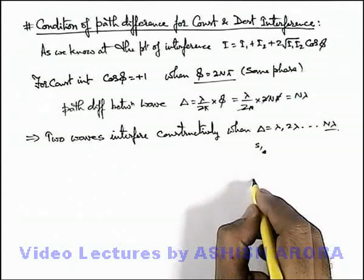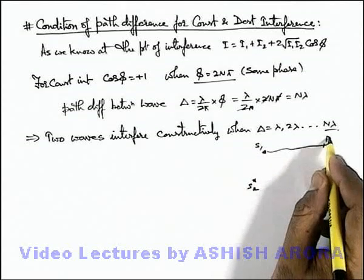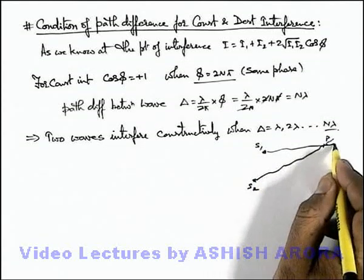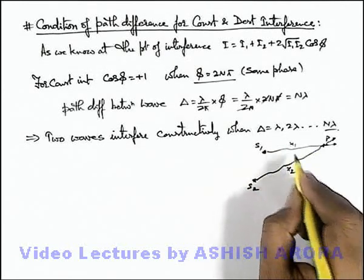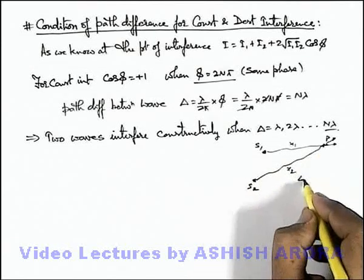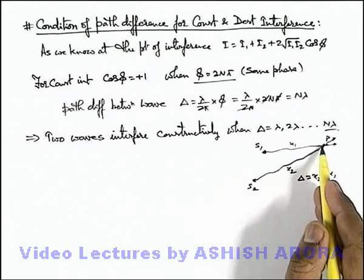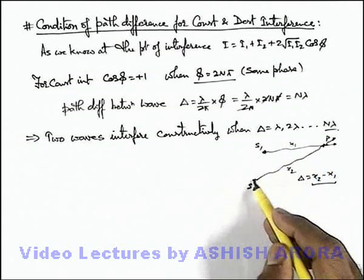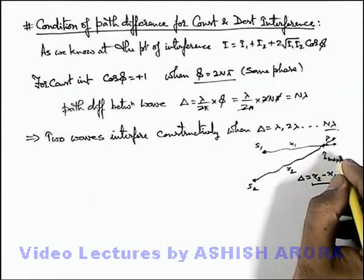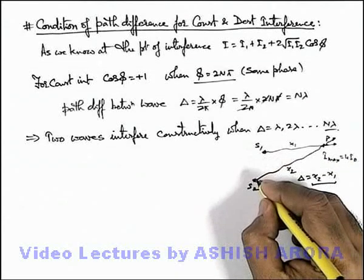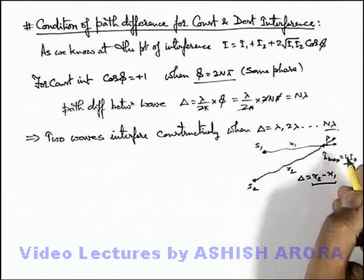Say if there are 2 light sources S₁ and S₂ which are coherent and switched on at the same time, and P is the point where the waves from these 2 sources superpose. If point P is at distances x₁ and x₂ from the 2 sources, the path difference is x₂ minus x₁. If this is a multiple of λ, the intensity at P will be maximum — that is 4I₀ if both sources produce equal intensities I₀ — otherwise it is given as (√I₁ + √I₂)².